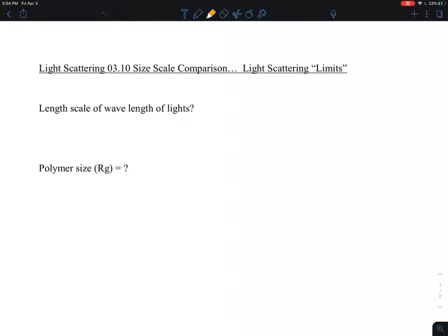For the last one is what I call the quote-unquote size scale comparison. Light scattering has a limit. And what do you mean by limit? The short answer is not limits about molecular weight characterization, but about size characterization. We cannot measure the polymer size when your molecular weight is too small. So when your polymer size is too small, we cannot really measure the size of the polymer chain. So where is this coming from?